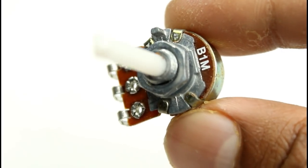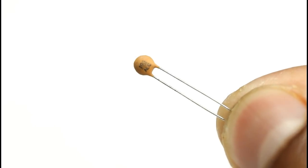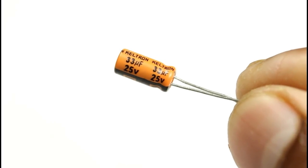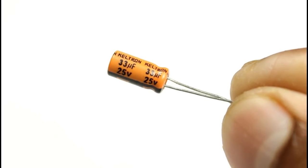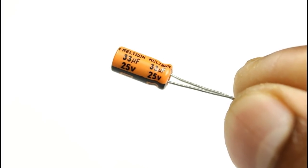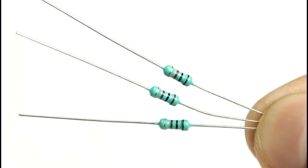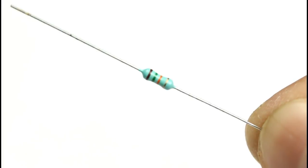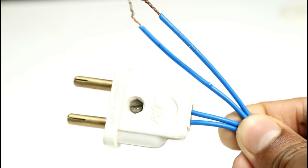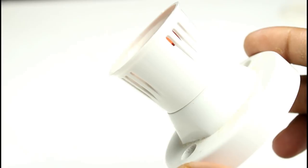A 1 megaohm potentiometer, a 103 pF capacitor, a 33 microfarad capacitor (you can choose any voltage above 16 volt), three 1 kilohm resistors, a 15 kilohm resistor, a power cable to power your device, and a lamp holder. You can use any kind of load. Put all the components on the board and solder them.